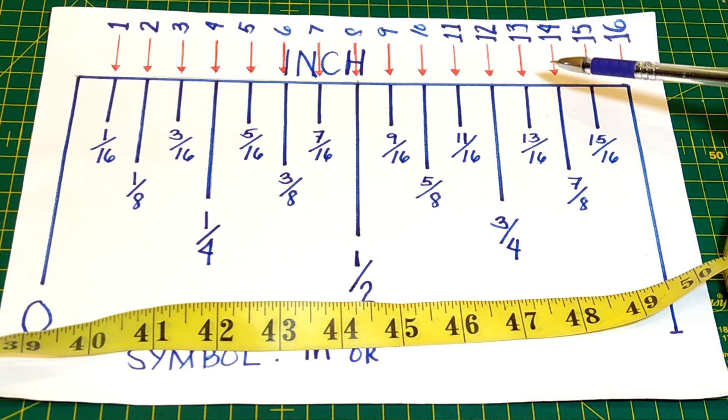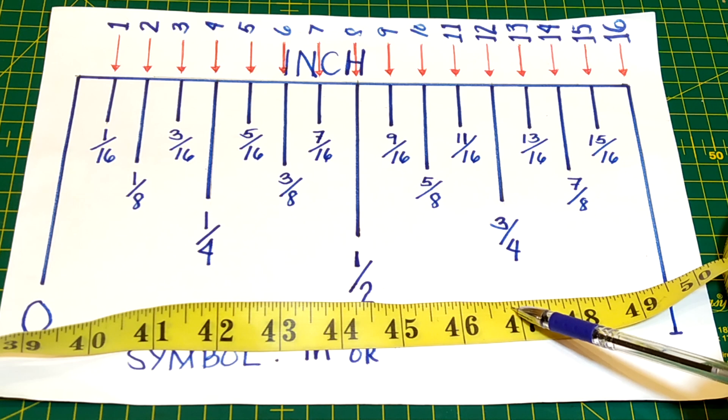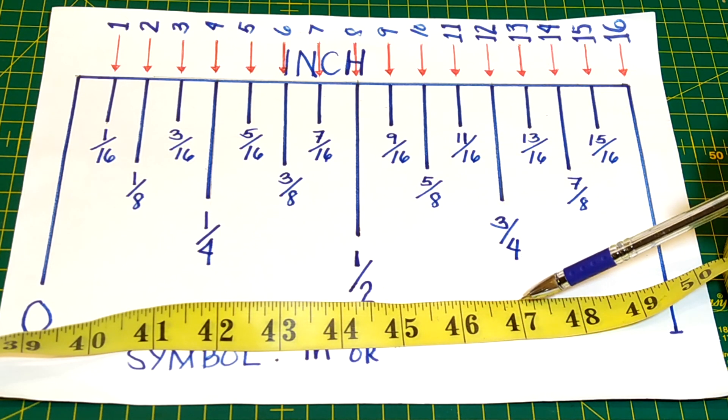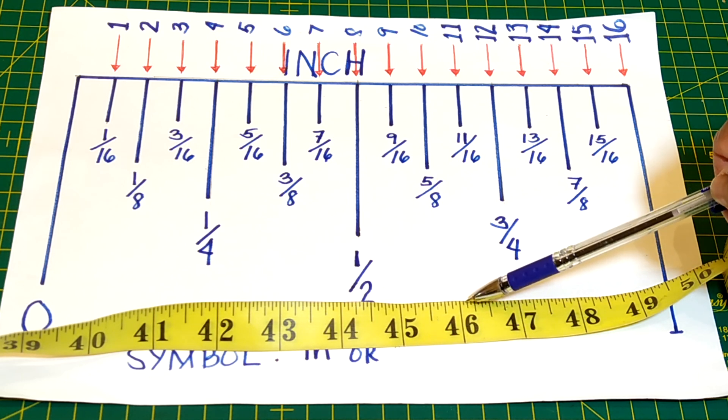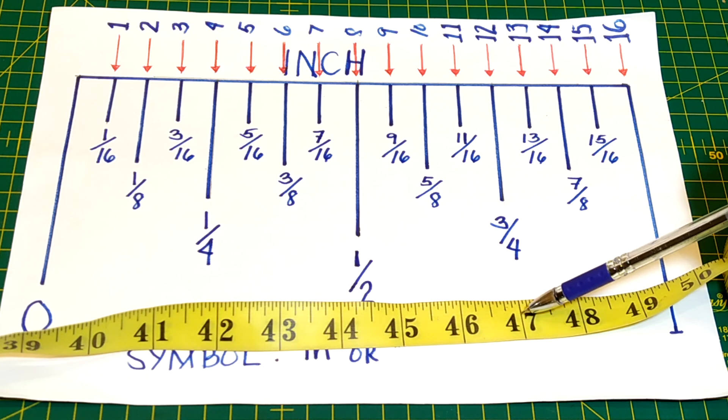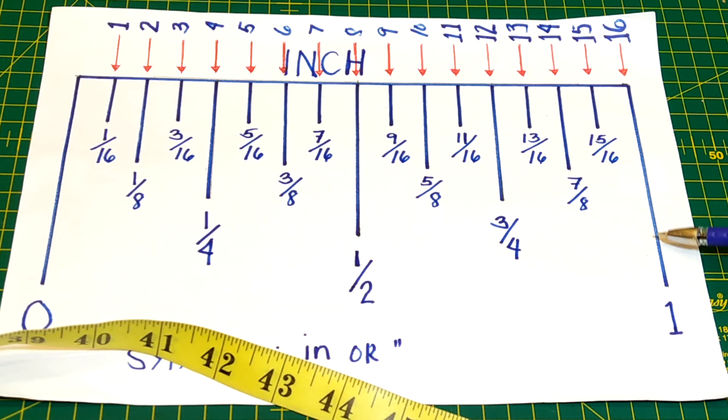The thirteenth line is 13/16. The fourteenth line is 14/16 or 7/8. You have to count these lines here. You have to start from that one, don't start from the biggest or the longest. You have to start from the smallest one, then it will end to the last long one. The fifteenth line is 15/16, and this is the last line which makes this one an inch.